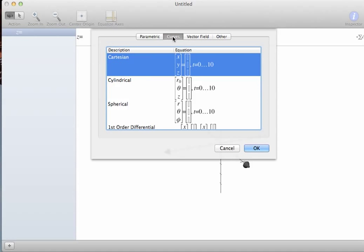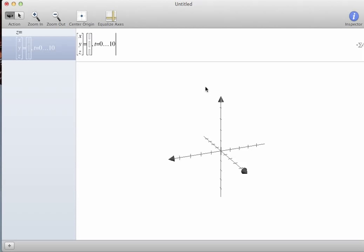And so what I really want is a curve. And my curve is Cartesian, so I'm going to select that by pressing OK. And it gives me this template up here, and from there I can actually just fill it in.